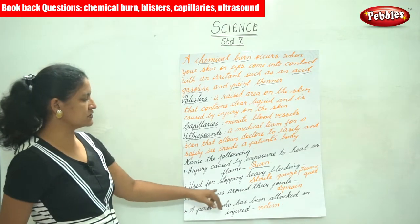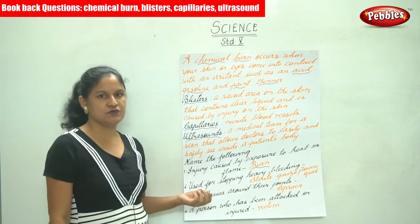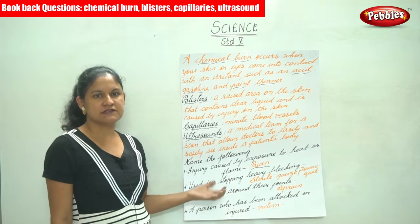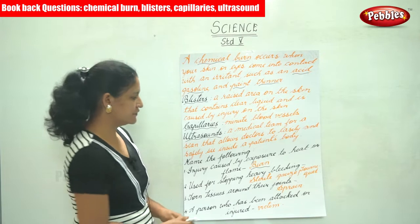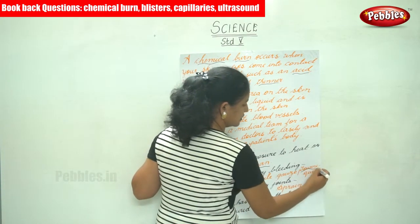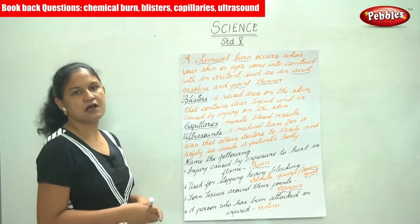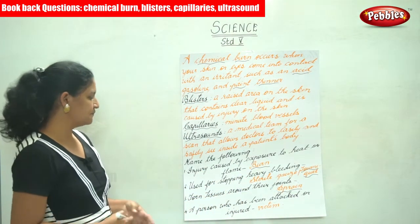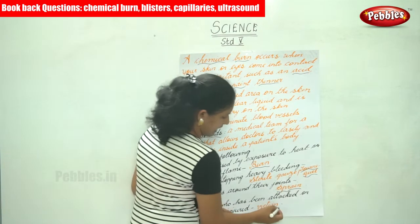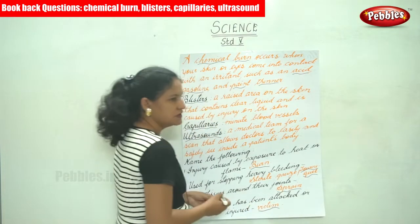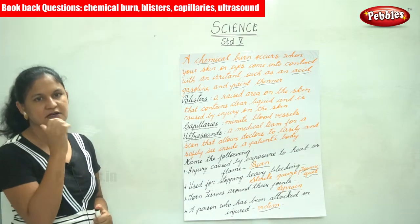Torn tissues around the joints are referred to as a sprain. A person who has been attacked or injured is known as a victim.